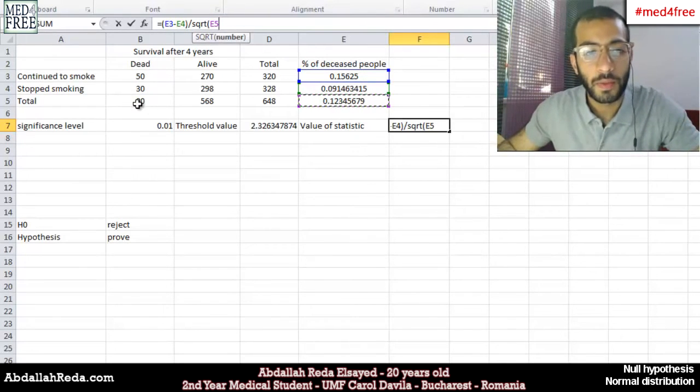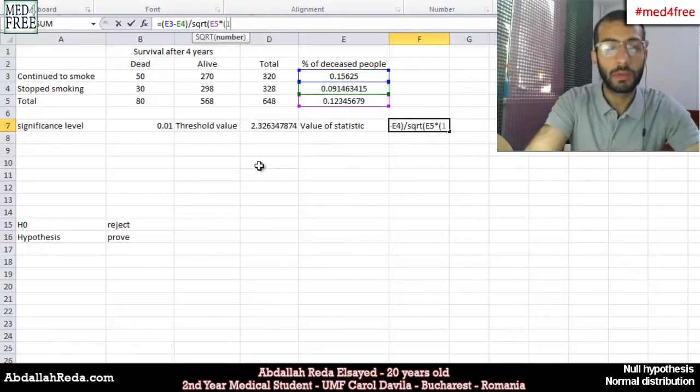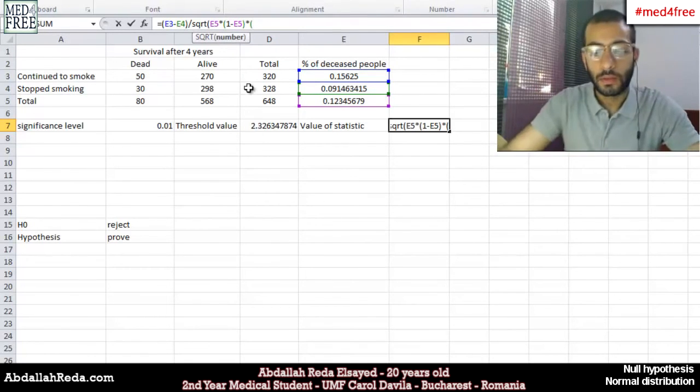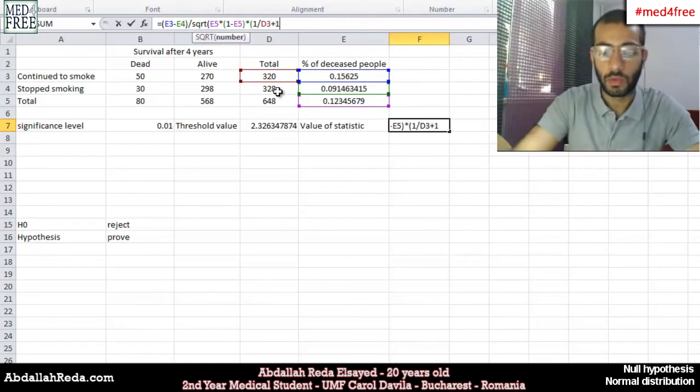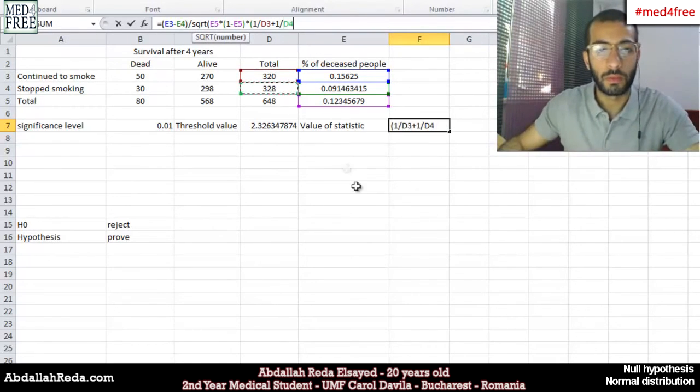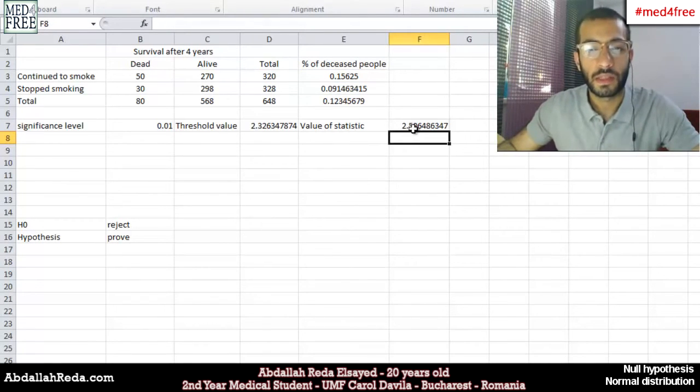divided by the square root of the total number of people who died throughout the monitoring, multiplied by 1 minus the same value, multiplied by the reciprocal of the total number of people who were smoking, plus the reciprocal of the total number of people who stopped smoking. And then we close the brackets, and we click enter. And we get our value of statistic.